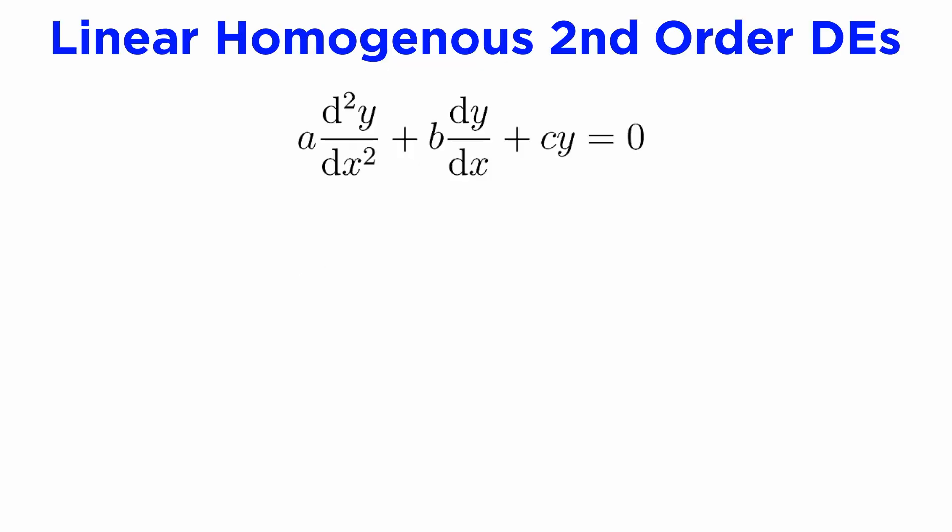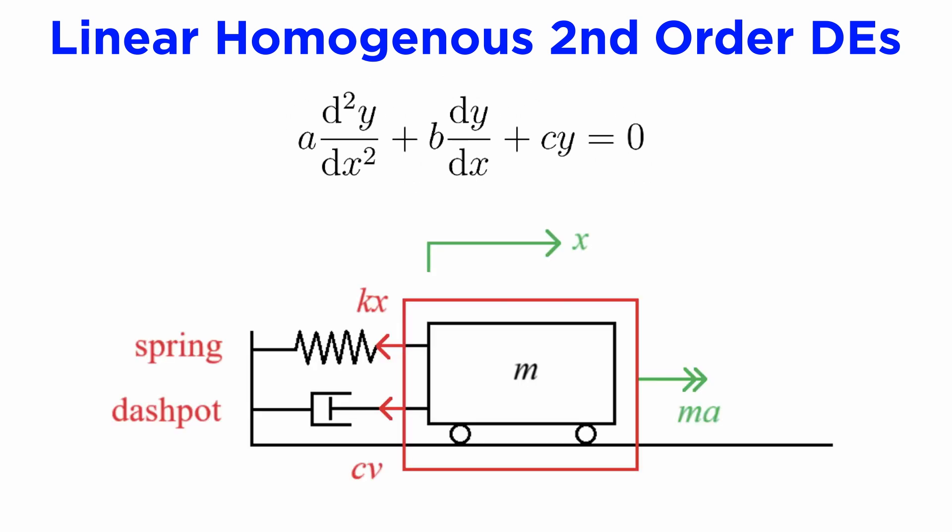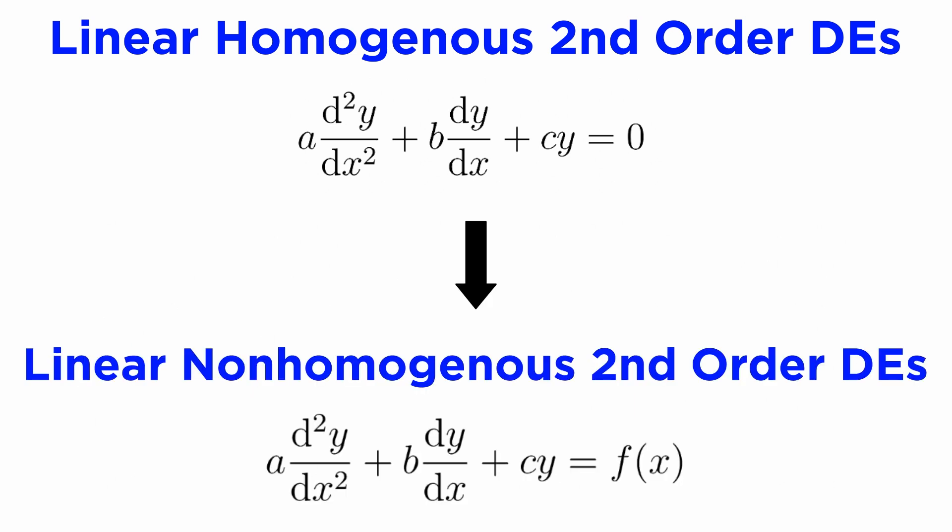In the last tutorial, we studied DEs of the form ay'' + by' + cy = 0, which are linear, homogeneous, second-order DEs with constant coefficients, and we saw that they're useful for modeling physical phenomena involving mechanical vibrations. This tutorial will build on this and look at the case where the right side of this equation is not zero, but instead some function of the independent variable, which makes it non-homogeneous.